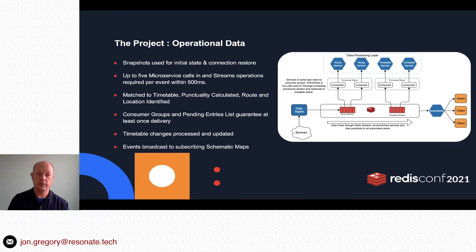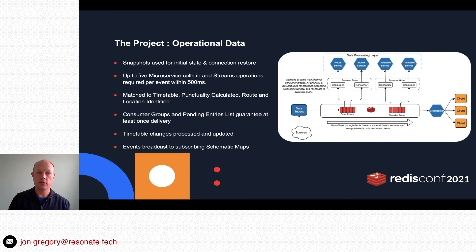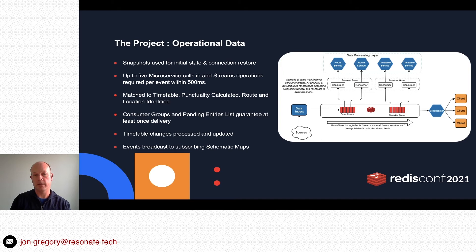Some of the processing functions include matching services to a timetable, working out punctuality, verifying the correct route (and calculating a predicted route if not), and handling timetable changes during the day. A key element is ensuring at-least-once delivery for messages, which we've solved using consumer groups and the Redis pending entries list. Using XPENDING and XCLAIM, when a consumer group picks up a message an entry goes onto the pending list; another service of the same type monitors this and claims any messages exceeding the time allocation, handling delayed or crashed services.